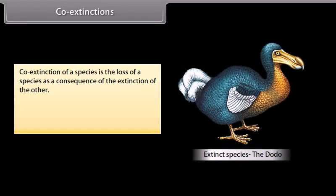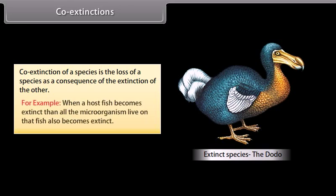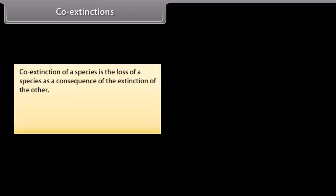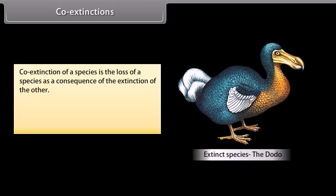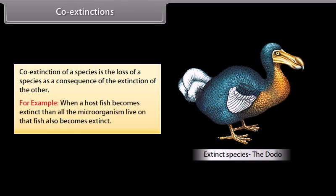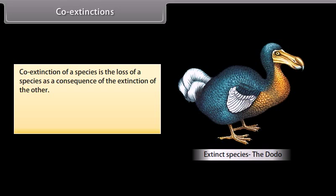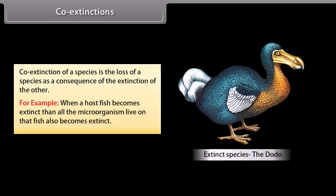Co-extinctions. Co-extinction of a species is the loss of a species as a consequence of the extinction of another species.